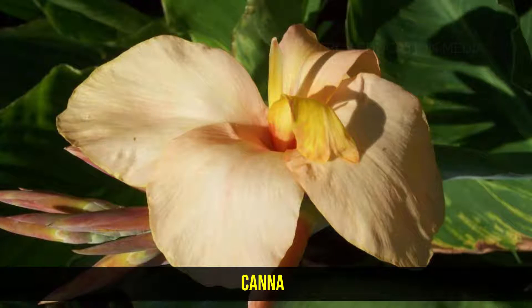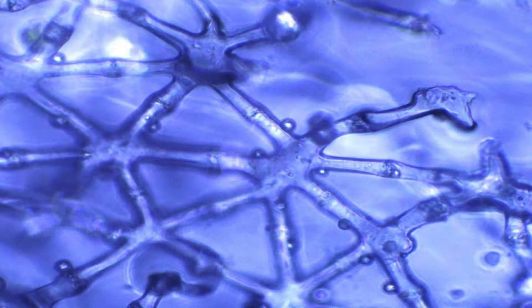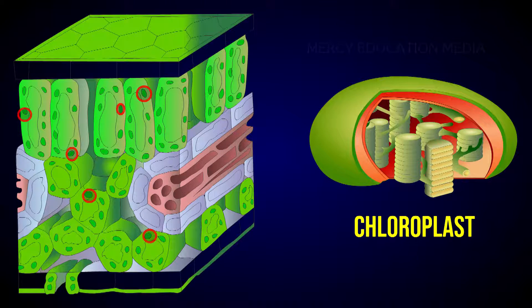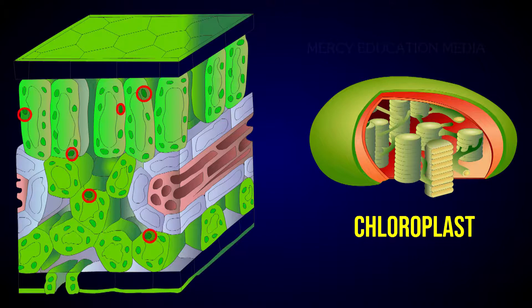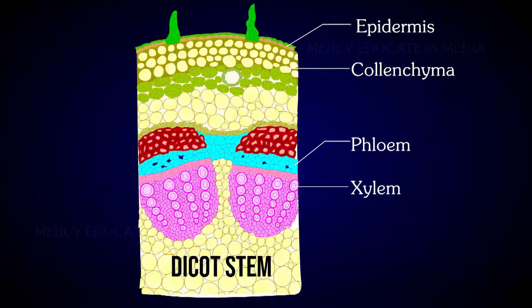These cells are called stellate parenchyma. In green parts of the plants, the parenchymatous cells have chloroplasts. These cells are called chlorenchyma. Its important function is photosynthesis. Now let us see about collenchyma.